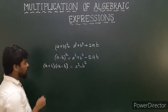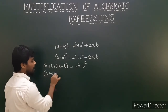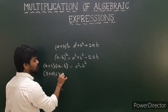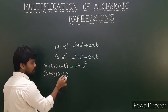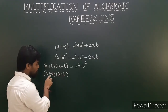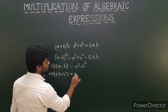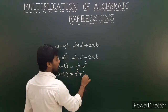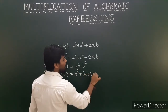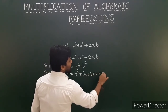The fourth identity is a unique one: x plus a into x plus b. Here the first term is the same and the second terms are different — one is a and one is b. You can expand it as x square plus (a plus b) x plus ab.